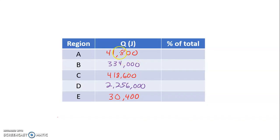I went ahead and filled these in. Let's just recap: 41,800 joules for A, 334,000 joules for B, 418,600 joules for C.